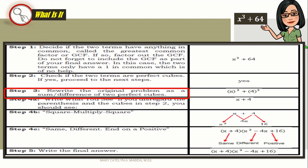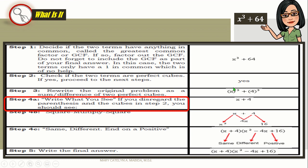Let's go to step three. Now rewrite the original problem as the sum or difference of two perfect cubes. There you go. And step 4a, write what you see. If you disregard the parenthesis and the cubes in step 2, the parenthesis and the cubes in step 2, you will get x plus 4.